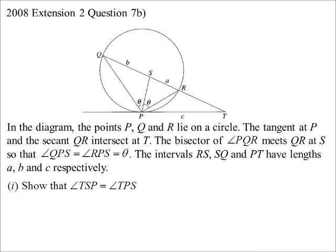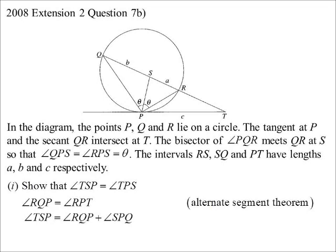Show that TSP and TPS are the same. Okay. Well, I know RQP is equal to RPT. Now, why do I know that? Well, that's my alternate segment theorem. TSP would be RQP plus SPQ. Exterior angle of a triangle.